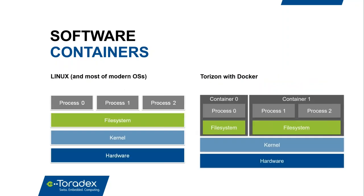Here we have a comparison between how a system on a traditional Linux OS compares to what we have on Torizon. The main difference is that the various processes, as well as their respective file systems, are within containers. The processes represent one's application, while the file system is everything that an application requires to run. With the traditional OS, all layers are heavily intertwined, requiring careful management of the overall OS over the lifetime of a project. Containers guarantee that an application will always have the right dependencies, removing the well-known dependency hell. Since each container is isolated, you can have two different versions of the same library on one system by packaging them in different containers.